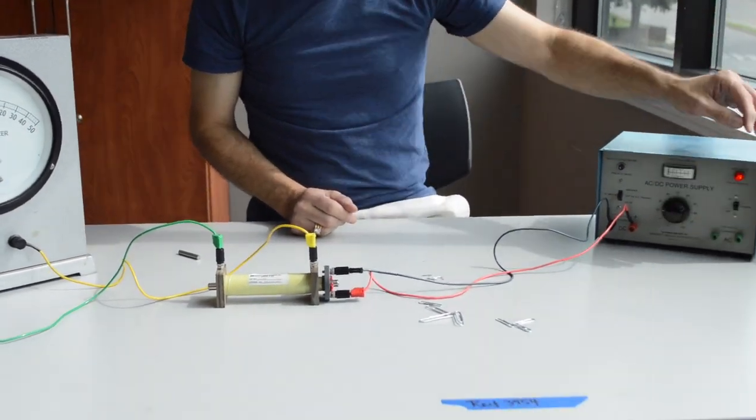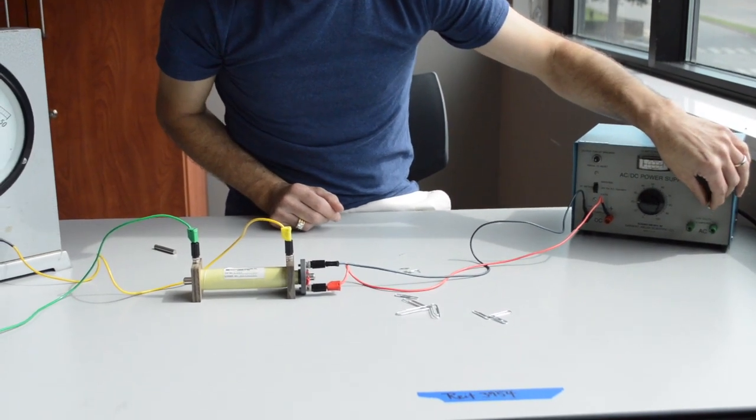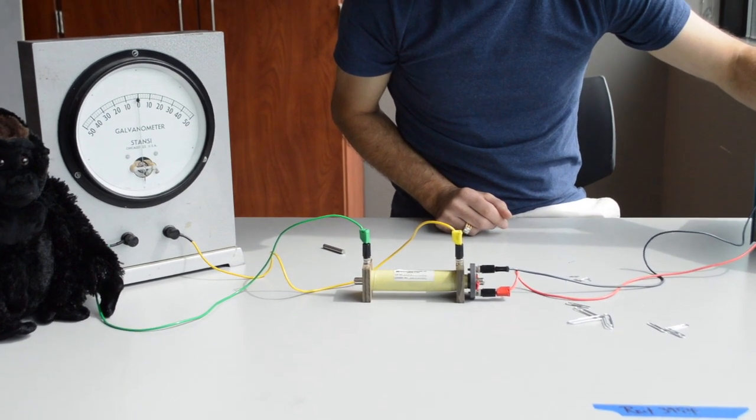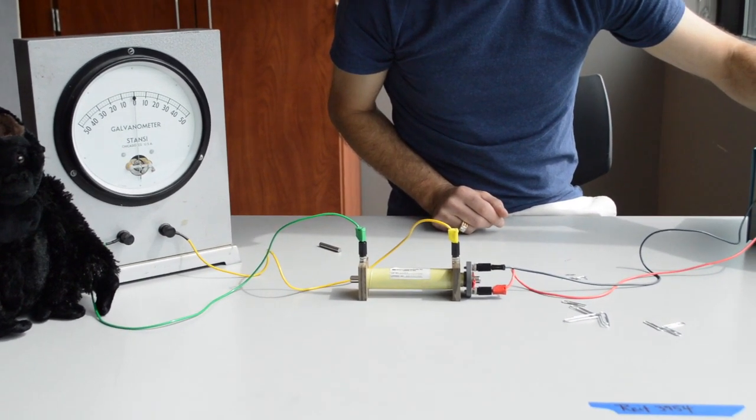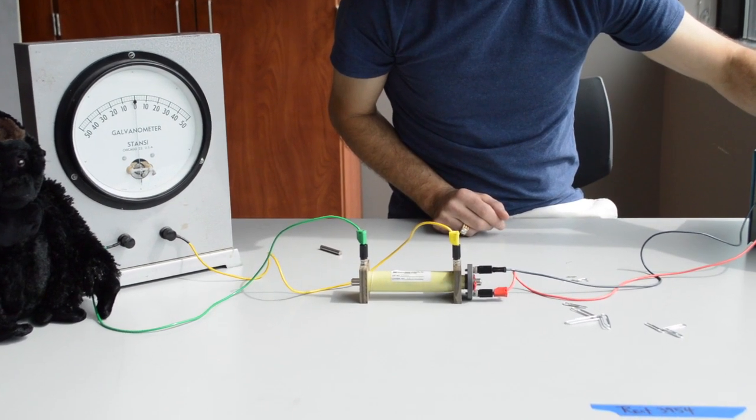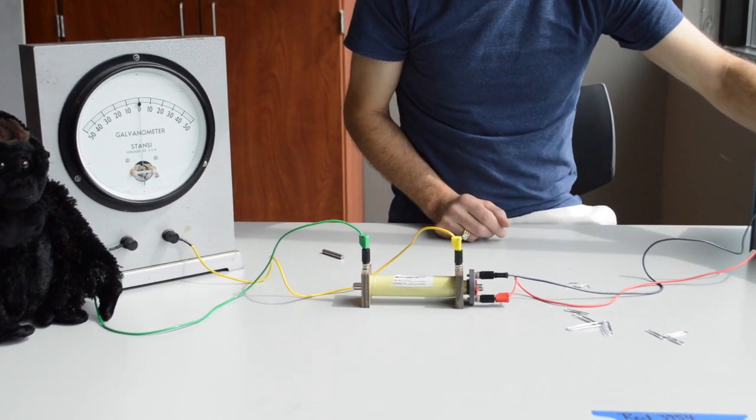One last thing to notice with the electromagnet. Watch what happens when I turn the electromagnet off. Very large deflection, very quick deflection. And when I turn the electromagnet on, same thing in the other direction.